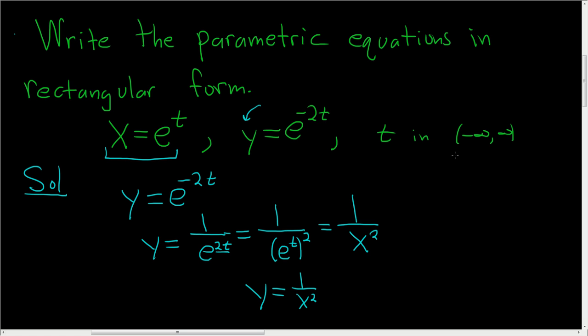Now t is any real number, but x equals e to the t. We know that the range of e to the t, if you look at the graph, is only the positive numbers, 0 to infinity. So x has to be positive, x is greater than 0. And that's it.